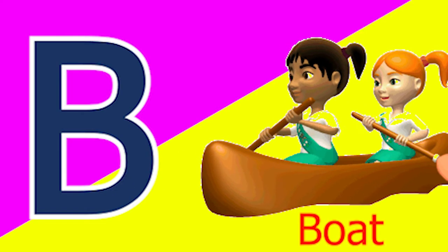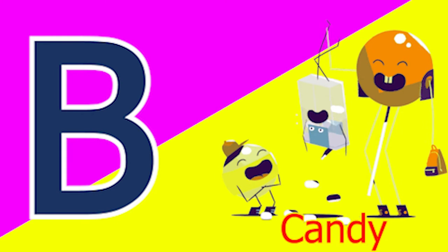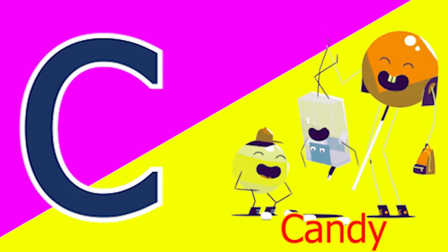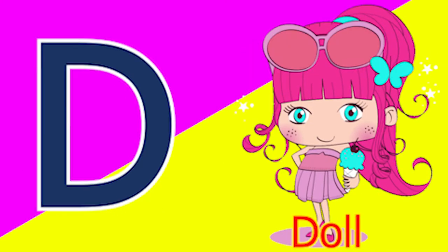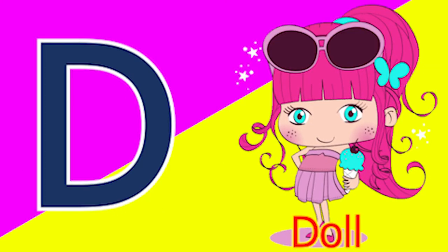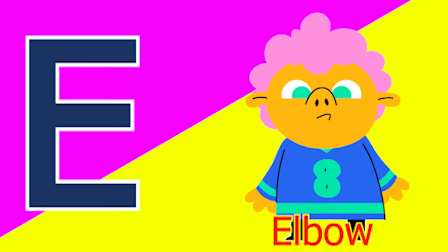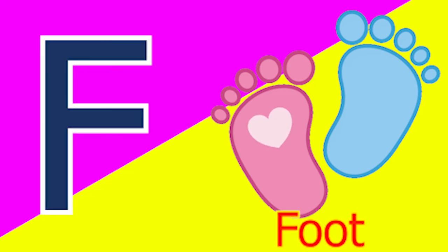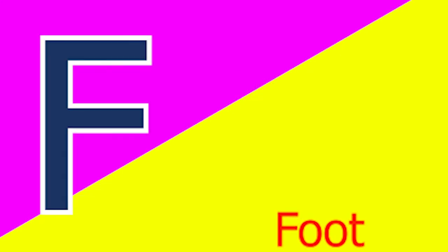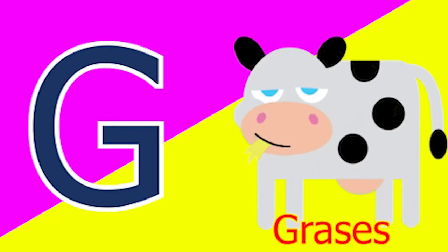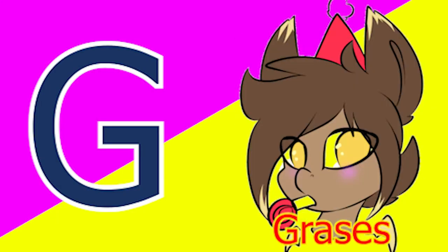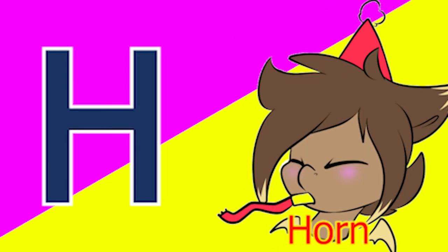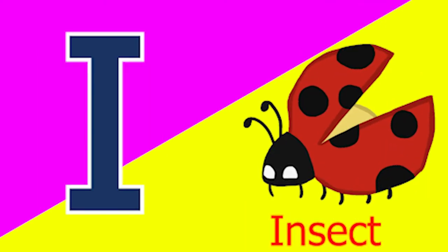A for aeroplane, B for boat, C for candy, D for doll, E for elbow, F for foot, G for glass and H for horn. I for insect.